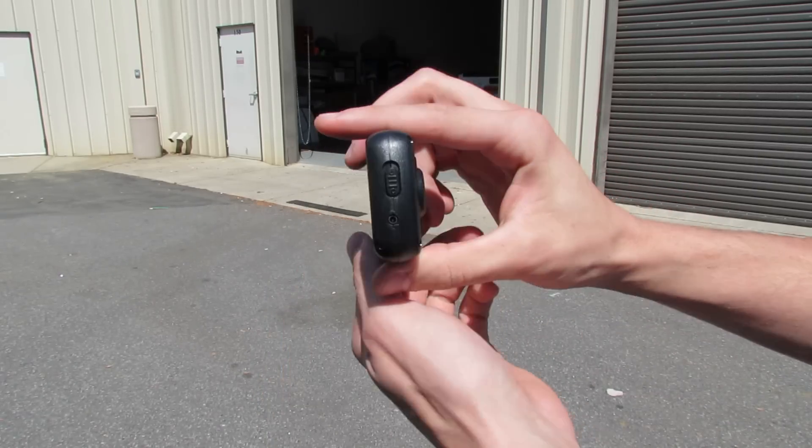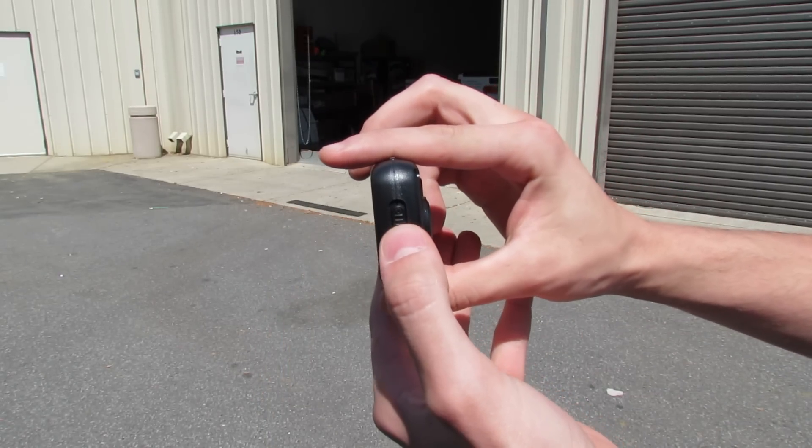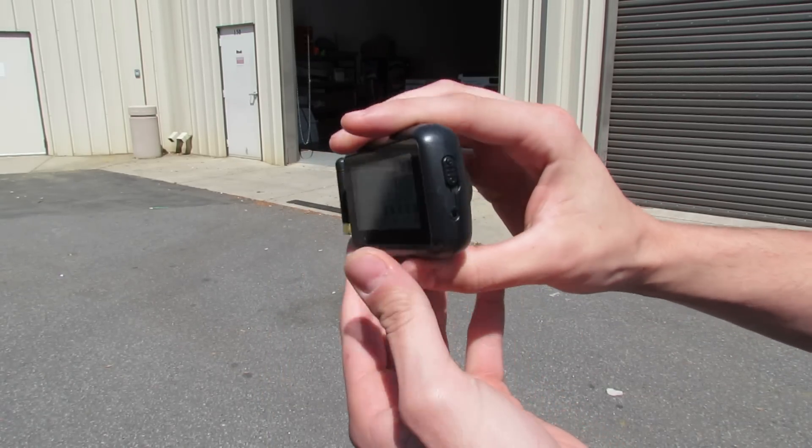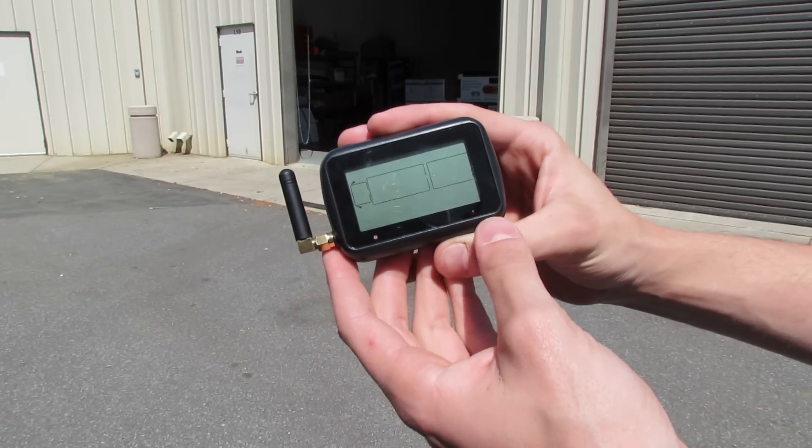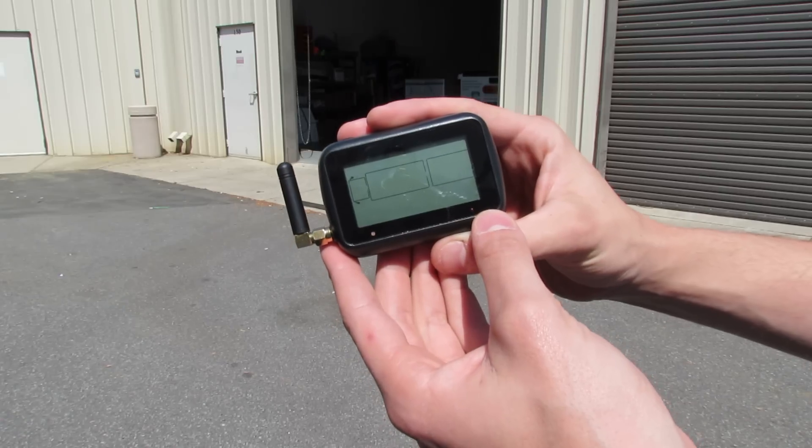To turn on the monitor, slide the switch up on the side of the monitor. Once it's slid up, the monitor will be on and you will see a display of a truck and a trailer with a battery icon on the bottom right-hand corner.